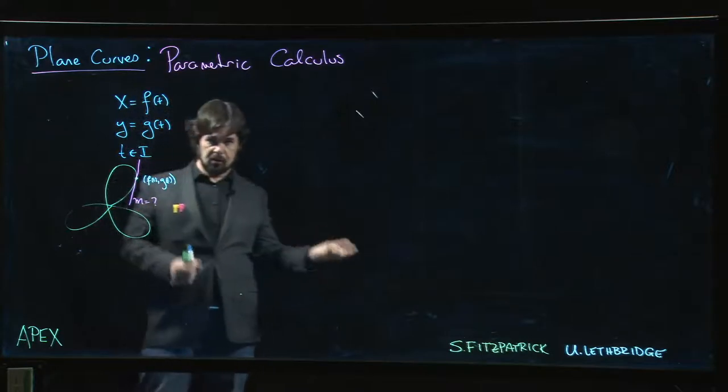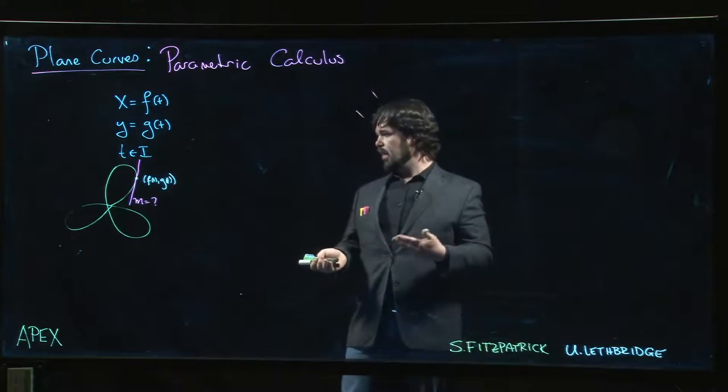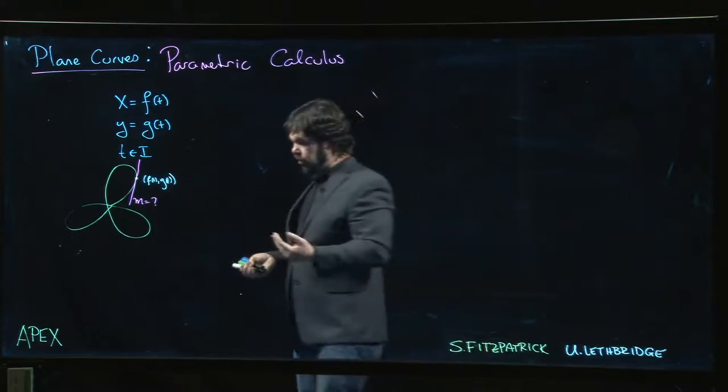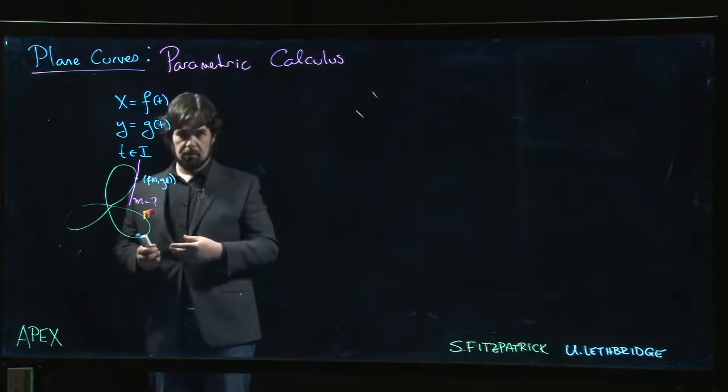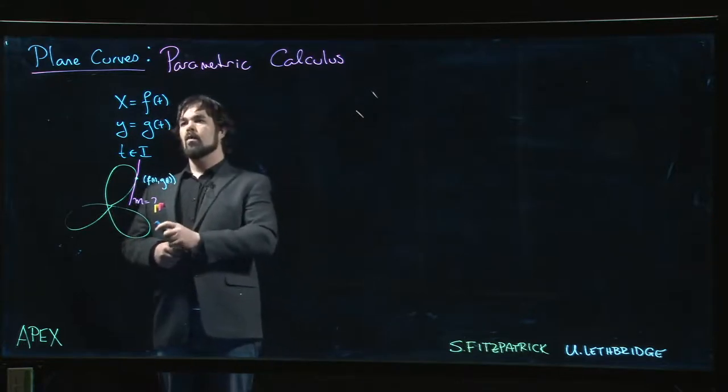But maybe small pieces of the curve, right? You can cut out pieces of the curve that do pass the vertical line test and you can say, okay, so y is a function of x. And so we still have that relationship between y and x, and so it should still be the case that the slope is given by dy/dx.